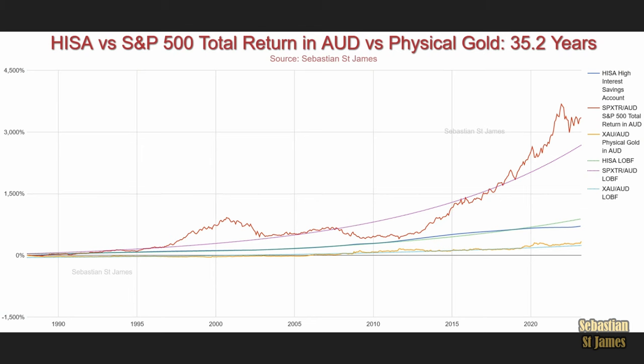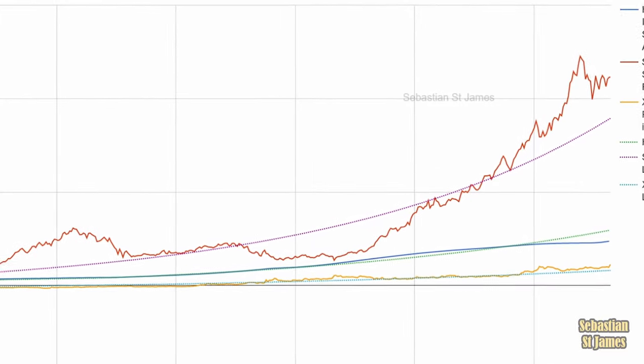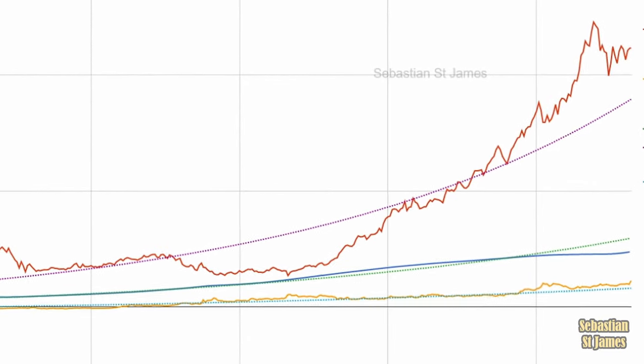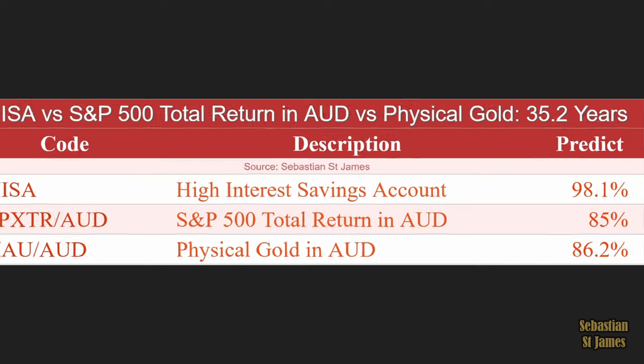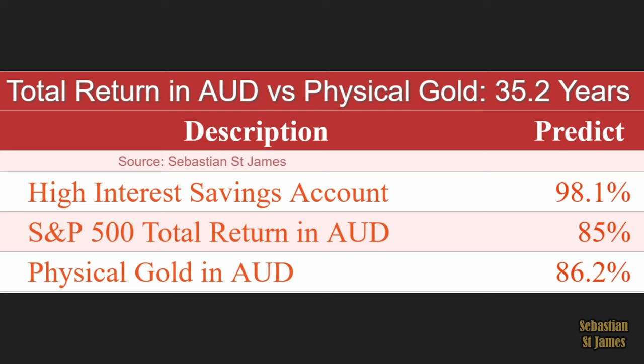How predictable within itself is each of these asset classes? Over 35.2 years: cash has a predictability of 98.1% — that's incredible. Stocks: 85%. Gold is minutely more predictable than stocks — let's call it more or less the same amount of predictability.